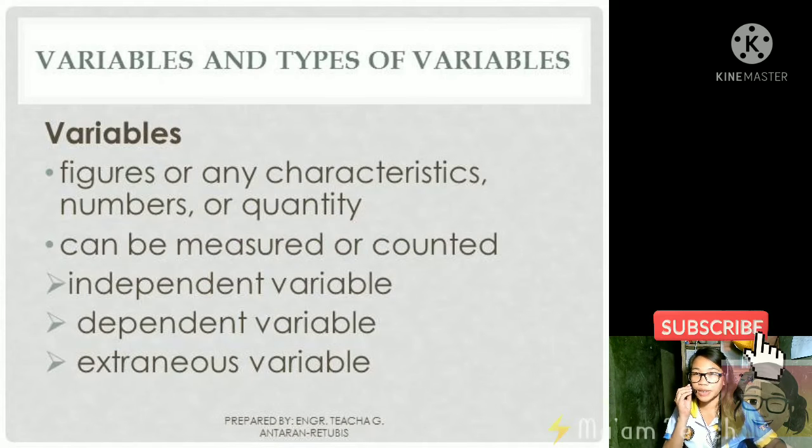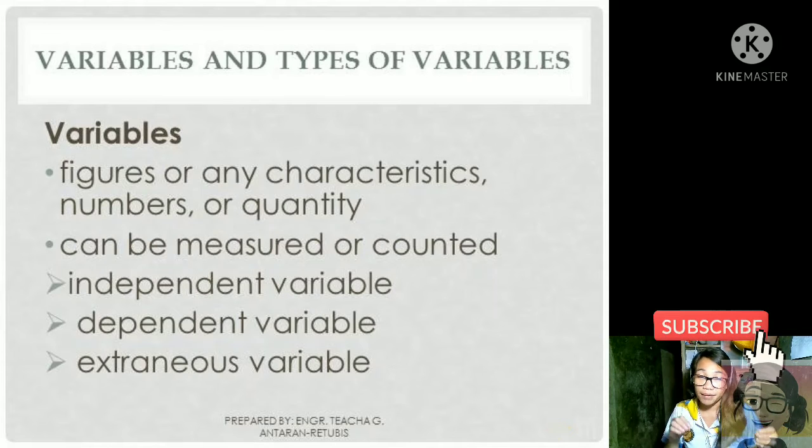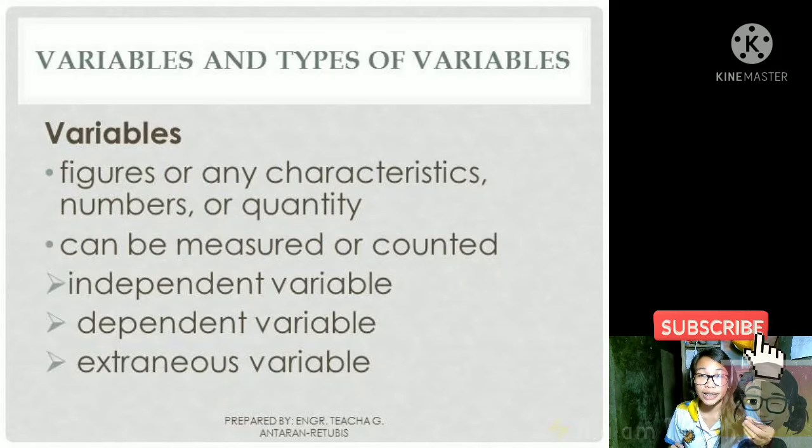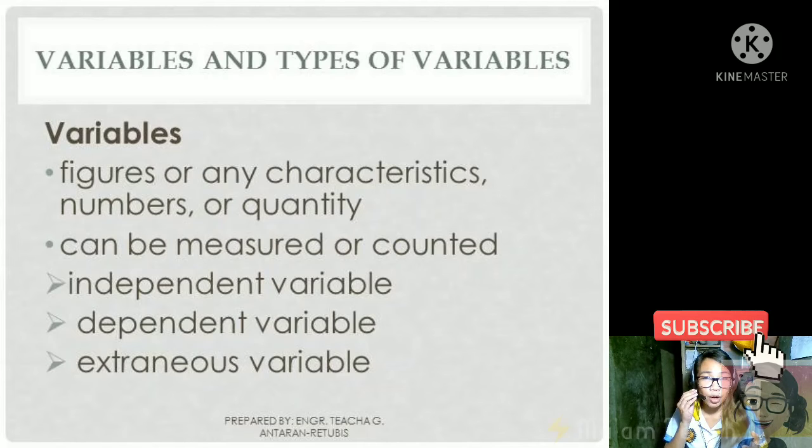Okay, so let us proceed with variables and the types of variables. From the term itself, variables are those figures or numbers that are varying, which means nagbabago sila over time. It could be any figure or maybe a characteristic, a number, or a quantity that can be measured or counted.